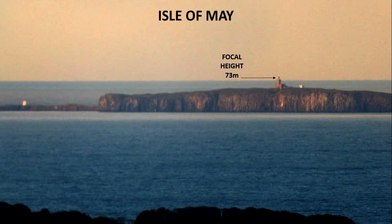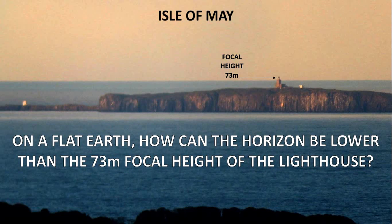So we have a focal height of the lighthouse at 73 metres. I wonder if any flat earthers can see the problem with this. On a flat earth, how can the horizon be lower than the 73-metre focal height of the lighthouse? Remember, we're looking down here towards the lighthouse from a camera height of 210 metres towards something that is 73 metres above sea level. How can the horizon be lower than the 73-metre focal height of the lighthouse if the earth is flat?